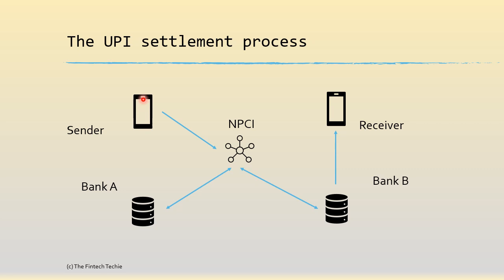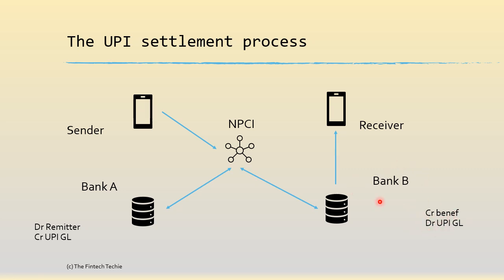The sender, through the sender PSP, initiates the transaction to remit to the receiver. The transaction goes to the NPCI infrastructure. NPCI then sends a request for debit to Bank A, so the debit of the remitter happens and credits a UPI GL at the same time. Once the debit has been approved, NPCI sends a request for credit to Bank B, which credits the ultimate beneficiary and debits the UPI GL at Bank B. The question is: how do Banks A and B settle?